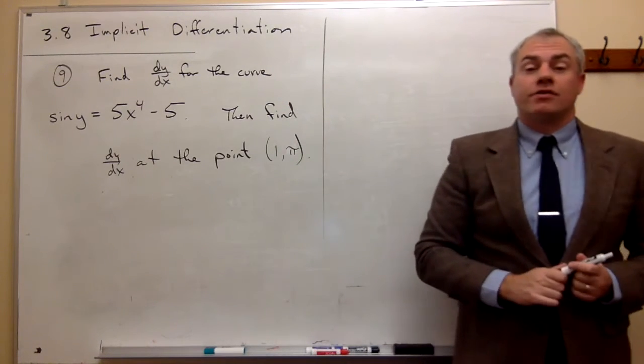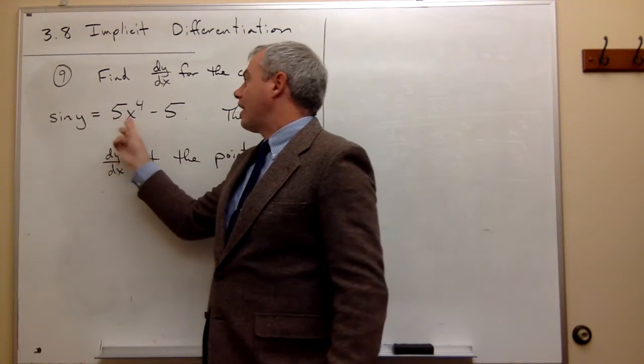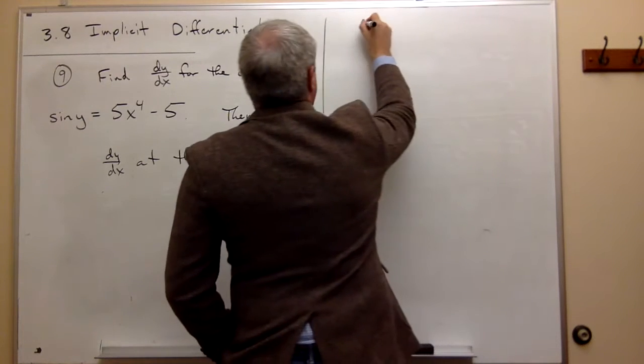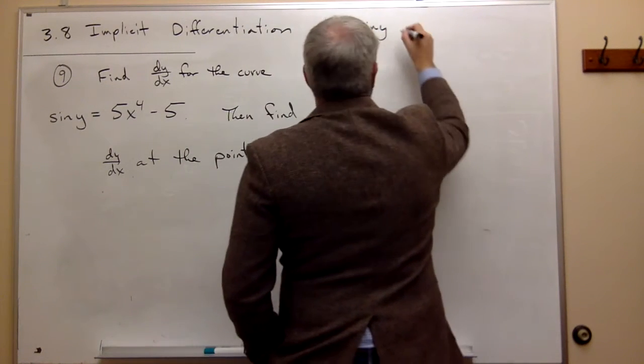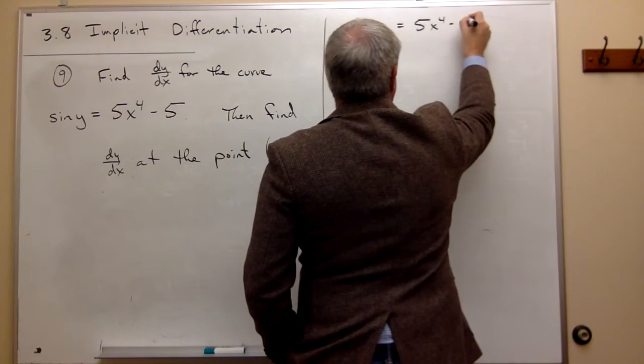So the first thing I need to do is take the derivative of sine of y equals 5x to the fourth minus 5. So let's write that down again. We've got sine of y equals 5x to the fourth minus 5.